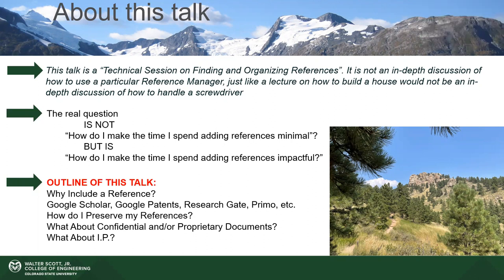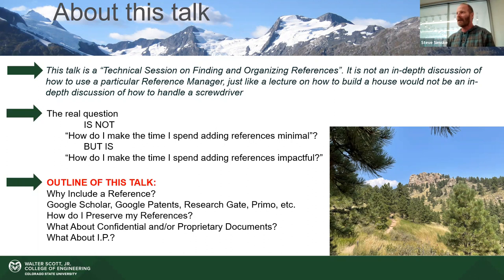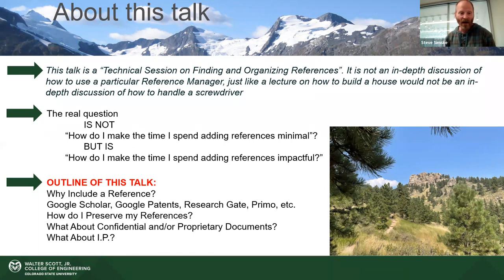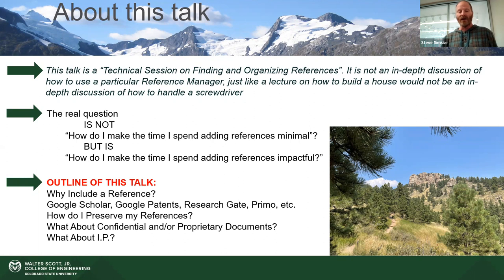The outline of this talk: why include a reference? You don't just pick a reference because it's something you've read. We'll talk about a few things to get references from, including Google Scholar — which is a superset of Google Patents — ResearchGate, Primo, et cetera. You've got Primo as a CSU student.